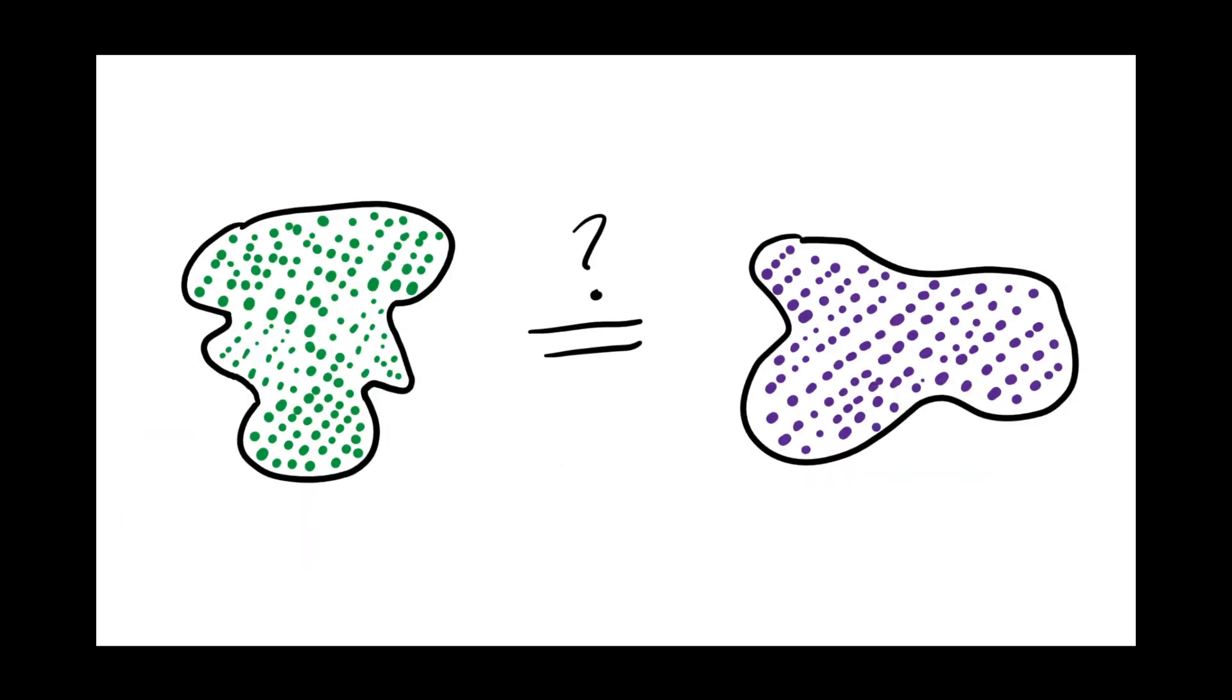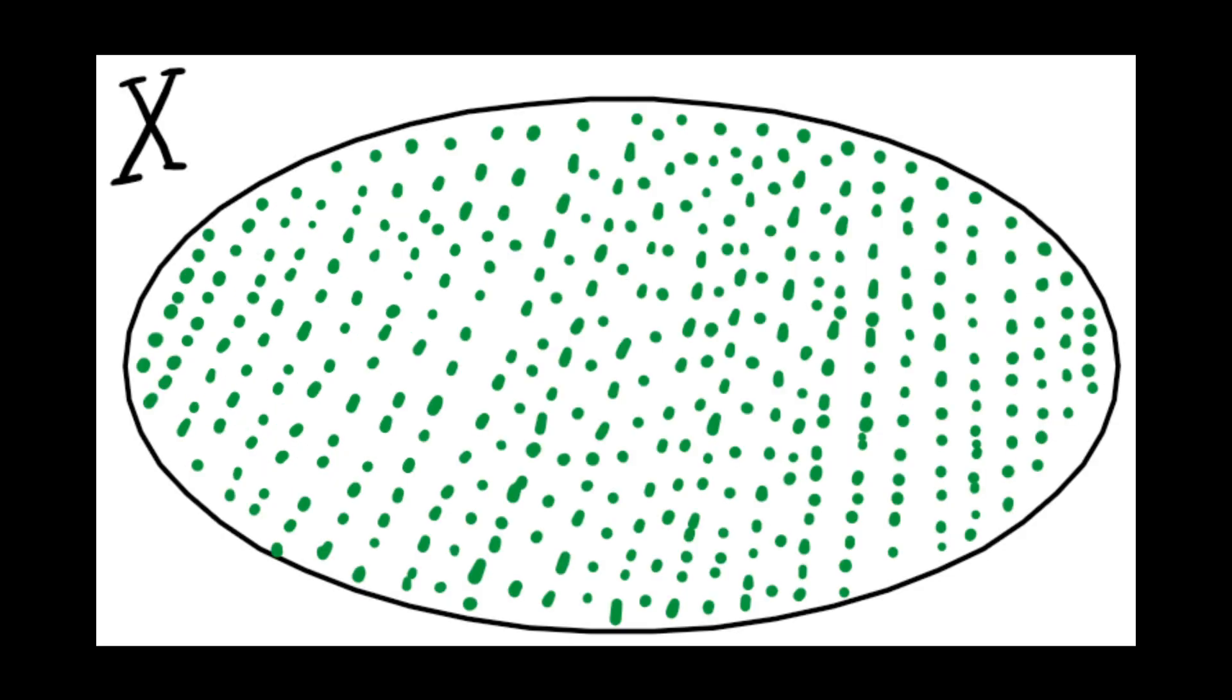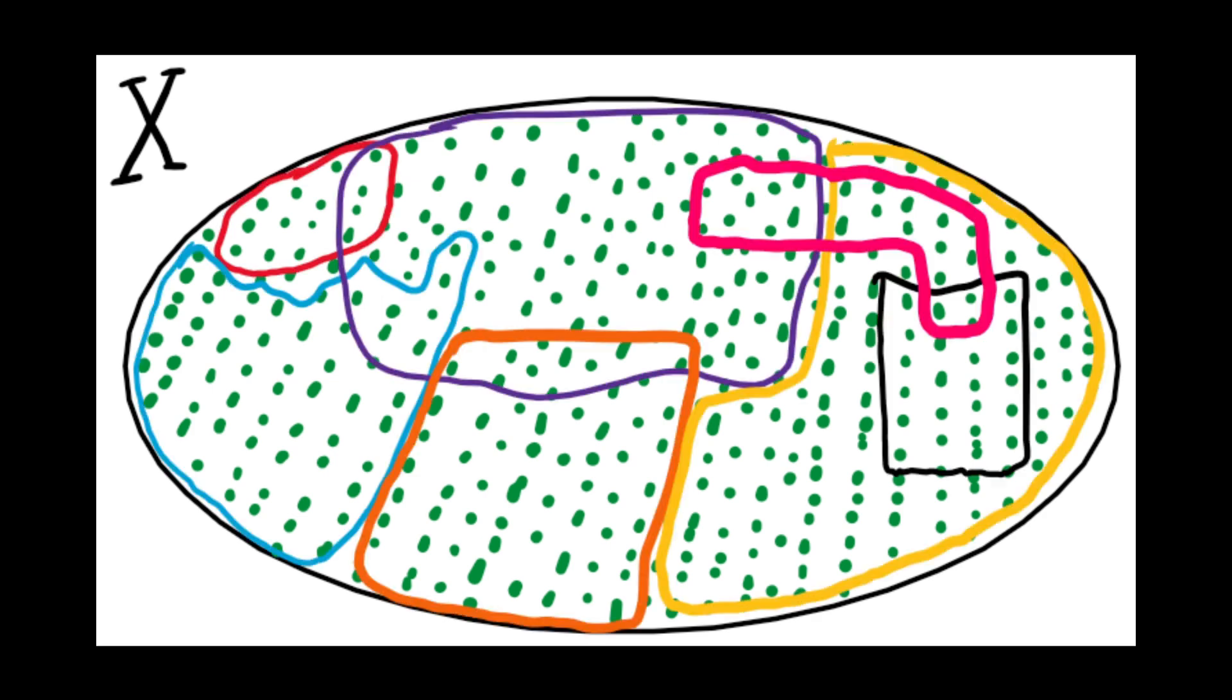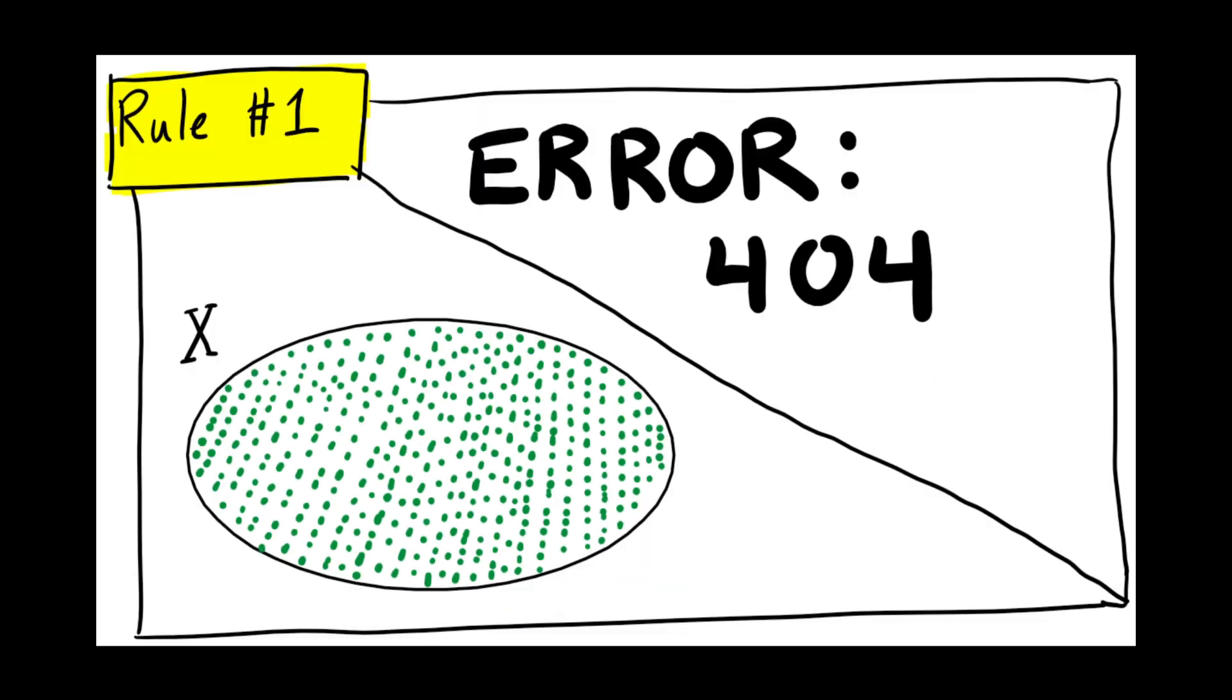So, to start telling apart topological spaces, we first need to figure out what the structure of a topological space is. A topological space starts out with a set of points that we'll call X. We then want to build a collection of subsets of X that follow these three rules: Two of these subsets are the sets with all of the points in X and the set with none of the points in X.